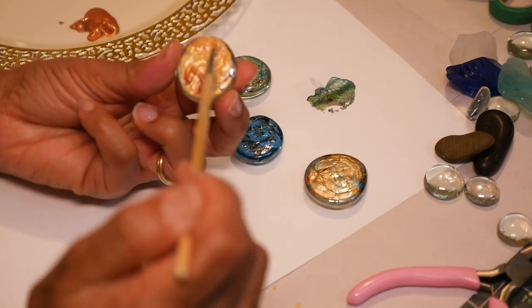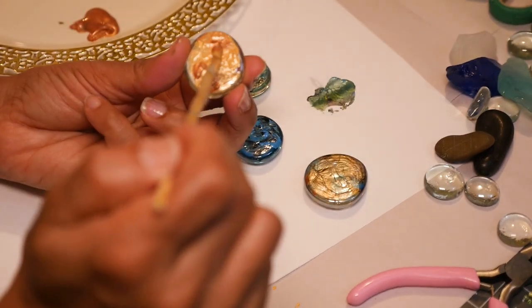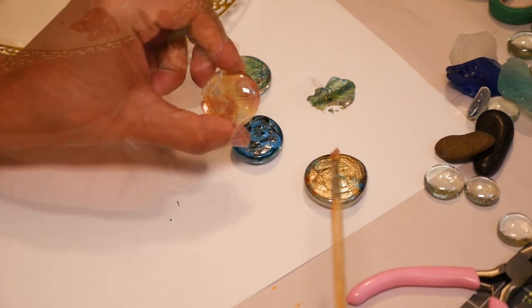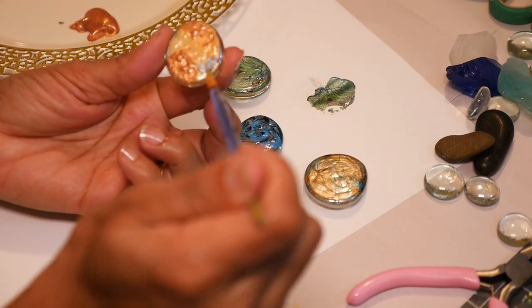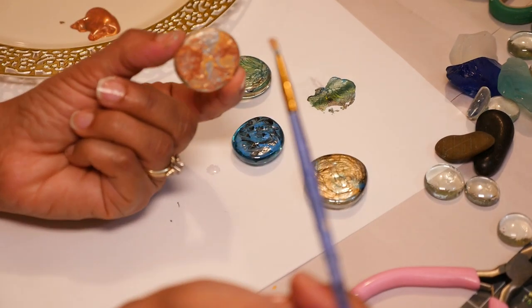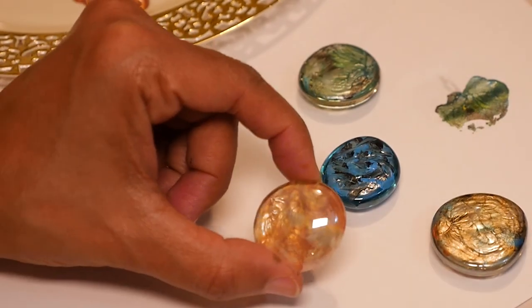I want this to be sort of an artsy piece so I'm just going to put bronze in a few areas. I think I'll also add a little silver. Then I'm going to swirl the paint around a little to give it a marbleized look.